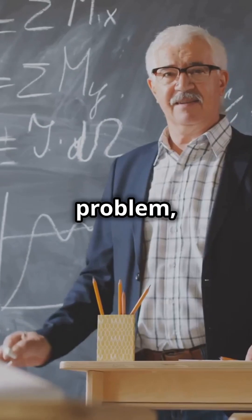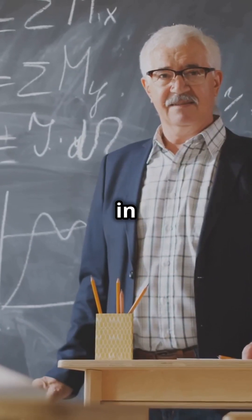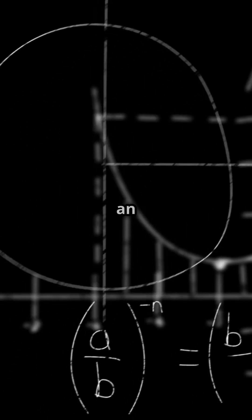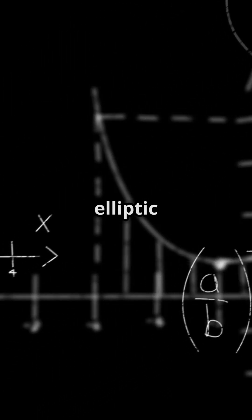This brain-busting problem dreamed up by Brian Birch and Peter Swinnerton-Dyer in the 1960s links the number of rational points on an elliptic curve to the behavior of an L function. But what's an elliptic curve?